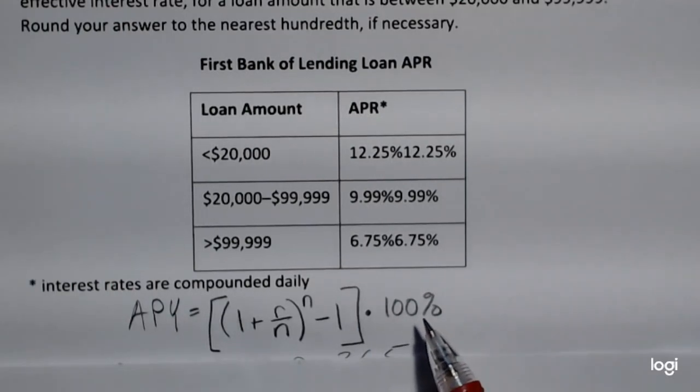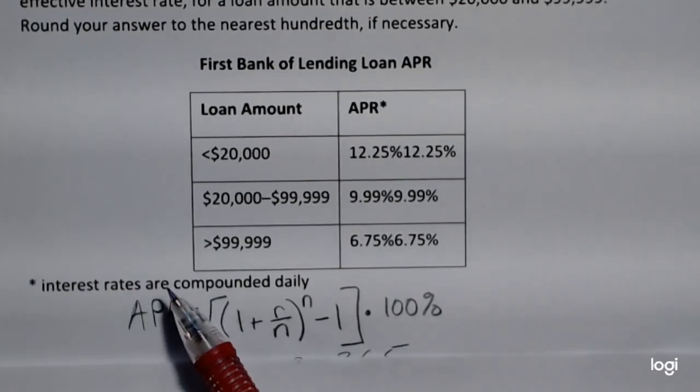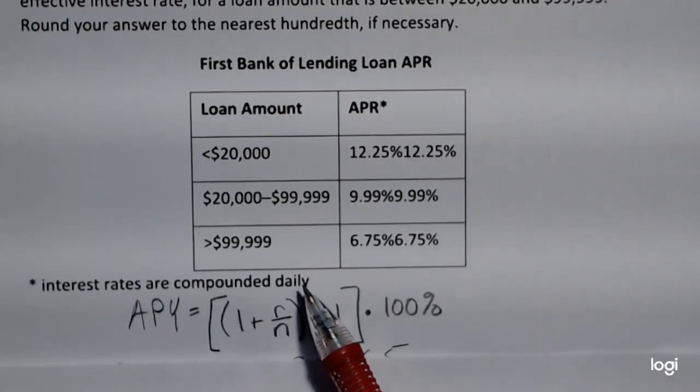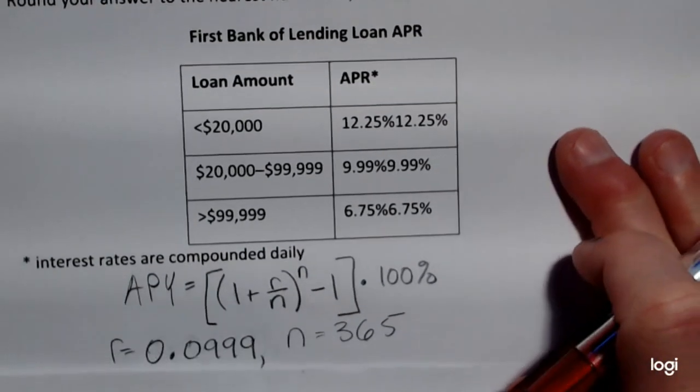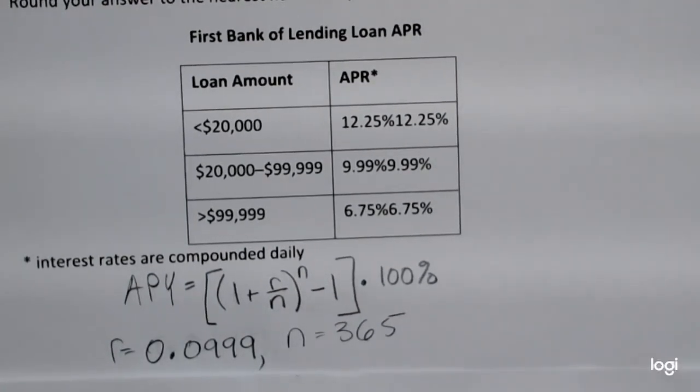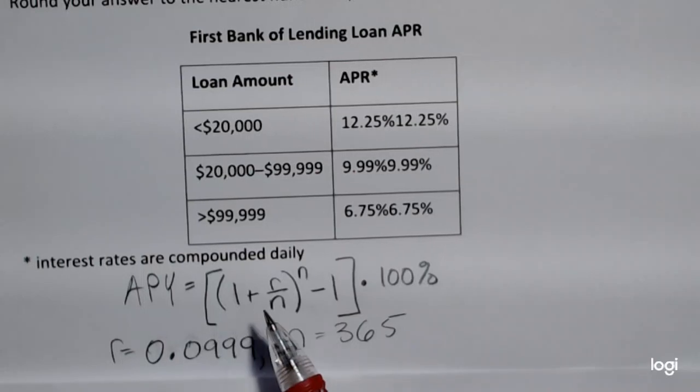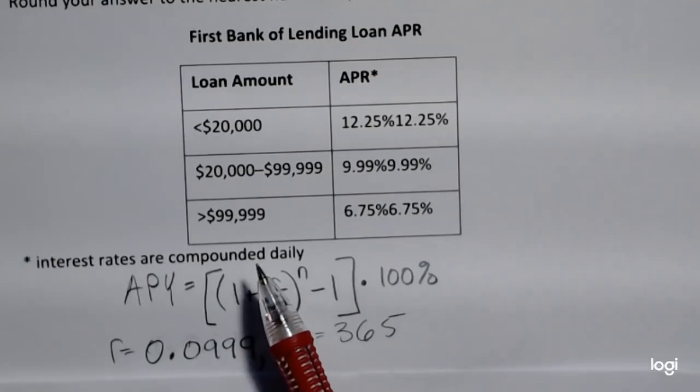Times 100%, and we're told that the interest rates are compounded daily. So the pieces we're going to need for this: we'll need n, which is the number of times you compound per year, and if we're compounding daily...